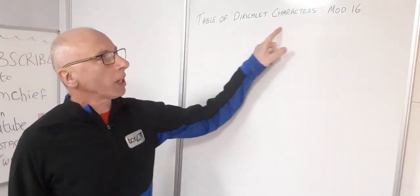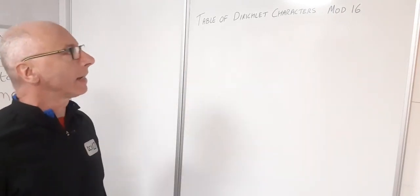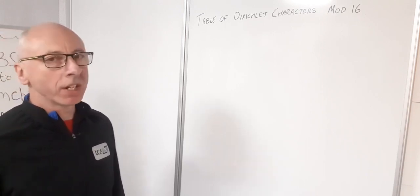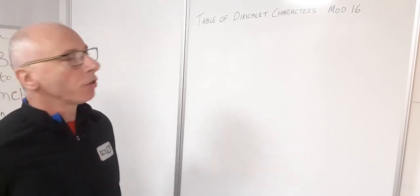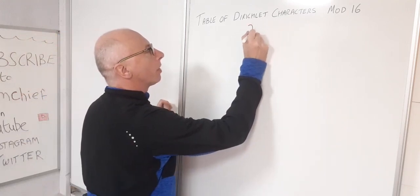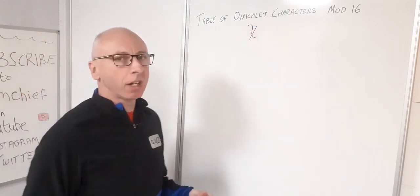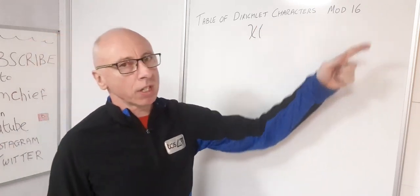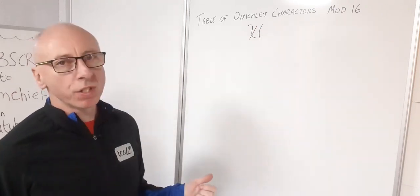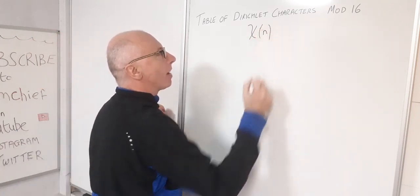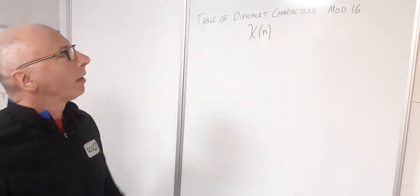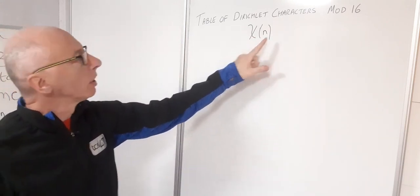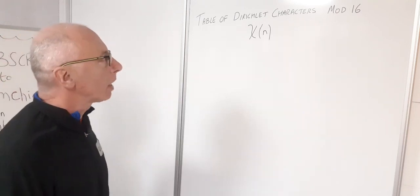Today we're going to draw up a table of Dirichlet characters modulo 16. First we need to work out what a Dirichlet character is. The Dirichlet character is denoted with the symbol chi — the Greek letter chi — and as we're dealing with mod 16 today, the values would be 1 to 16, so we'll just call that chi of n. This function chi has some properties that are important when building our table of Dirichlet characters.